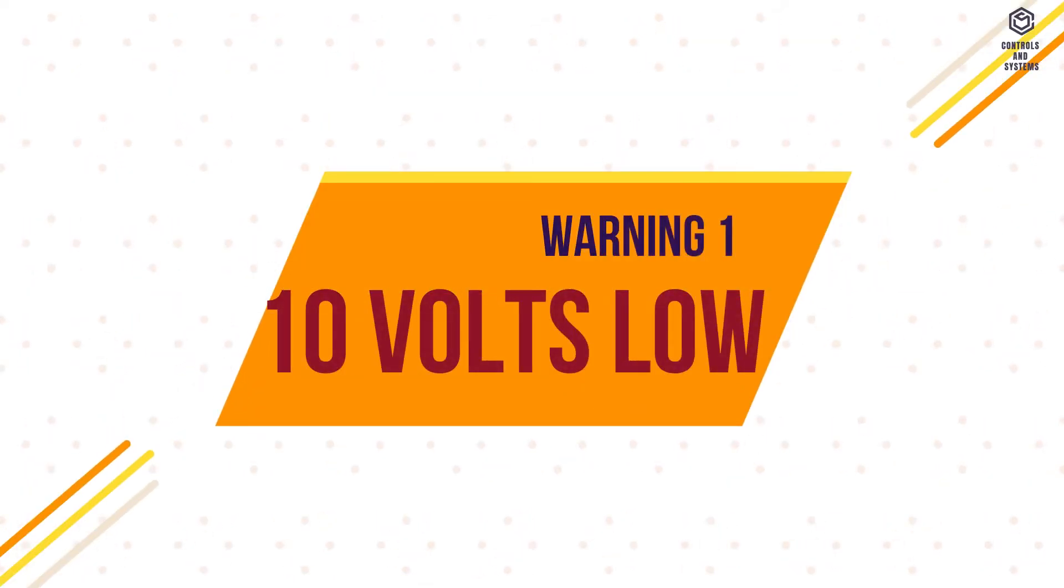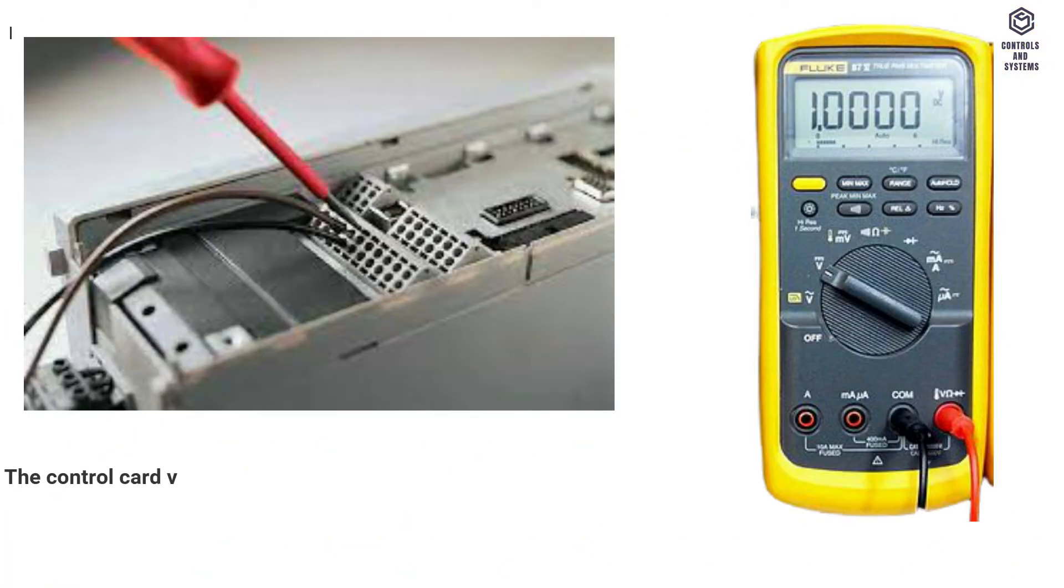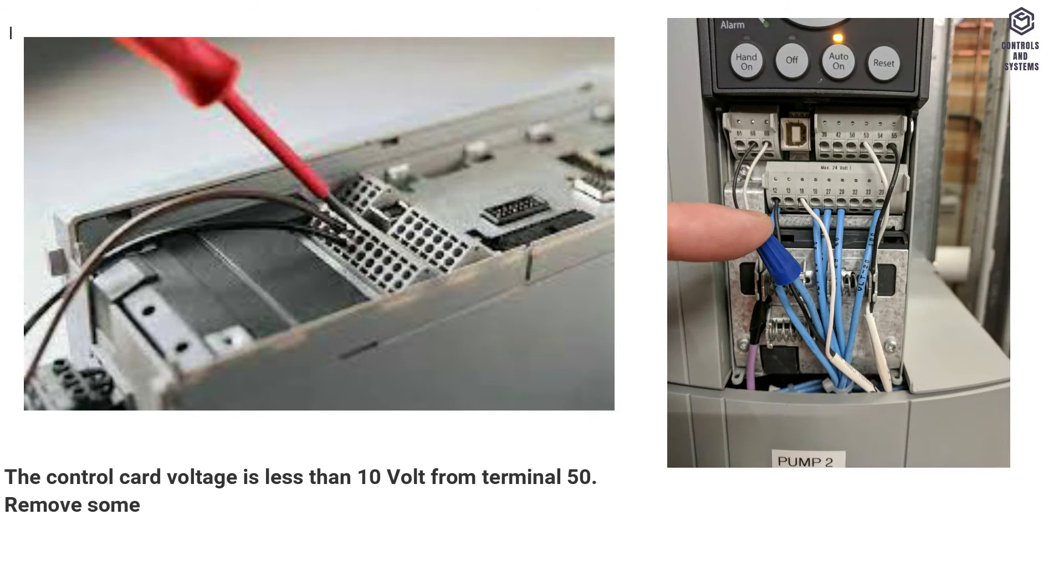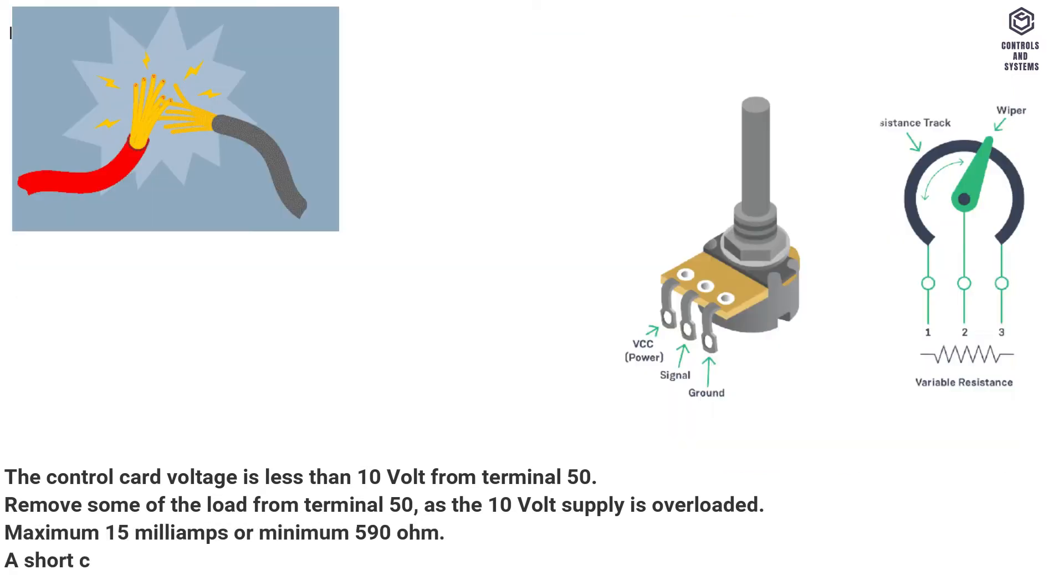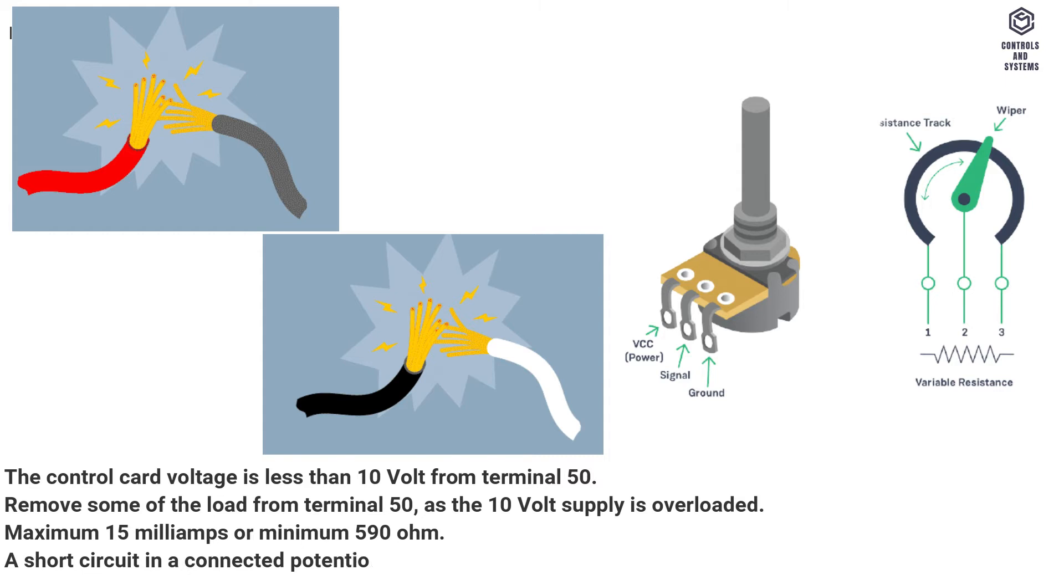Warning 1, 10V slow. The control card voltage is less than 10V from Terminal 50. Remove some of the load from Terminal 50, as the 10V supply is overloaded. Maximum 15mA or minimum 590Ω. A short circuit in a connected potentiometer or incorrect wiring of the potentiometer can cause this condition.